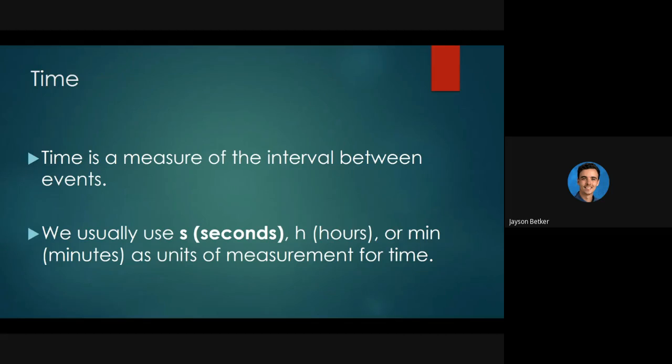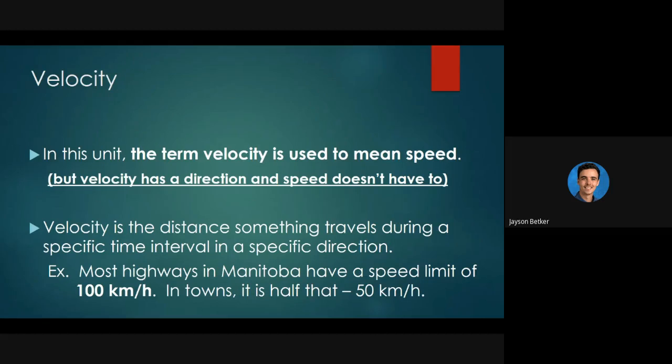In this unit we use the term velocity. Velocity is just a fancy term for speed, as far as we need to understand right now. Velocity has a direction with it, speed doesn't. In grade 10 physics we're not going to get too far into that, but in grade 11 and 12 physics you most definitely will have to know the difference. Velocity is the distance something travels during a specific time interval in a specific direction. For example, most highways in Manitoba have a speed limit of 100 kilometers per hour, and in towns or cities it's usually half that, 50 kilometers per hour.